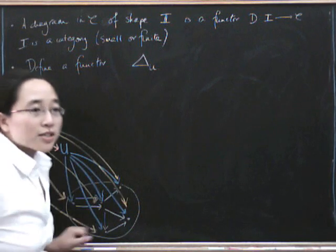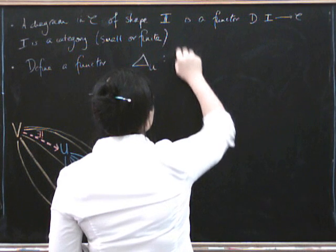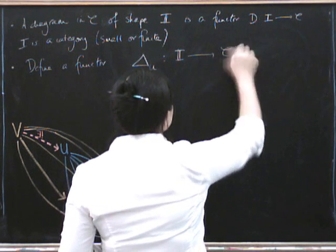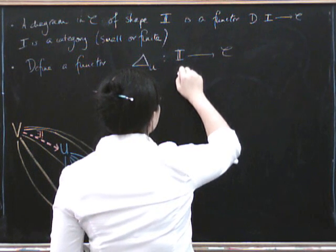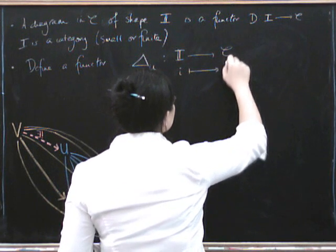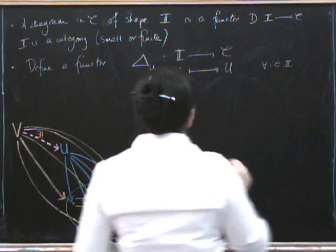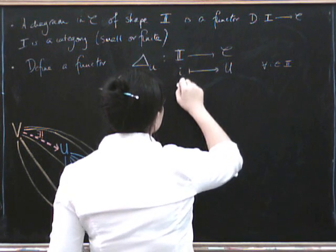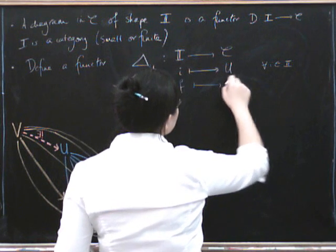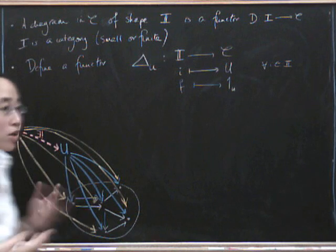So now we define a functor delta sub U. The little u there subscript is to tell us where everything is going to go. So this is the functor from I to C that sends absolutely everything. So it sends everything in I to our object U. For all i in I. And all morphisms therefore have to go to the identity. So it's called the constant functor.